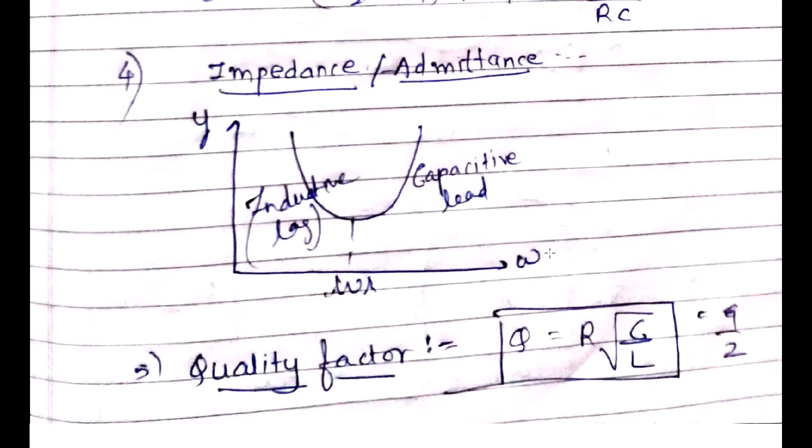Zeta, the damping ratio, is a concept I have taught in control systems — go and watch that video if you haven't. A higher value of zeta means more opposition to sinusoidal waves, while a lower value of zeta means less opposition to sinusoidal waves.